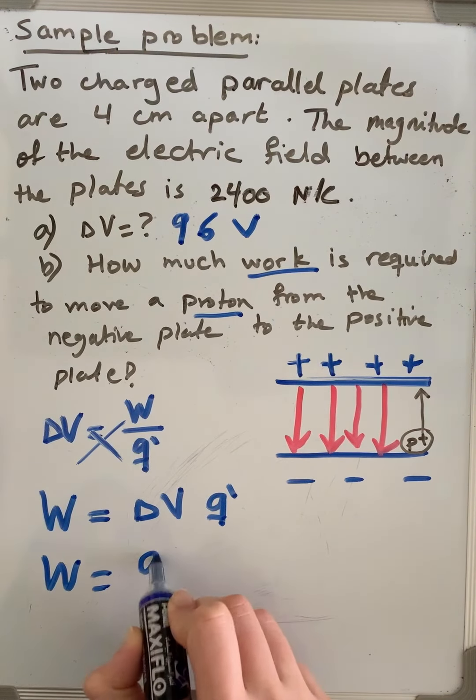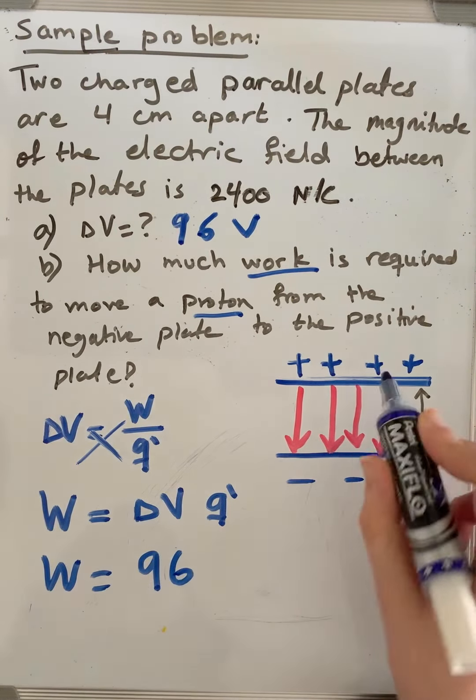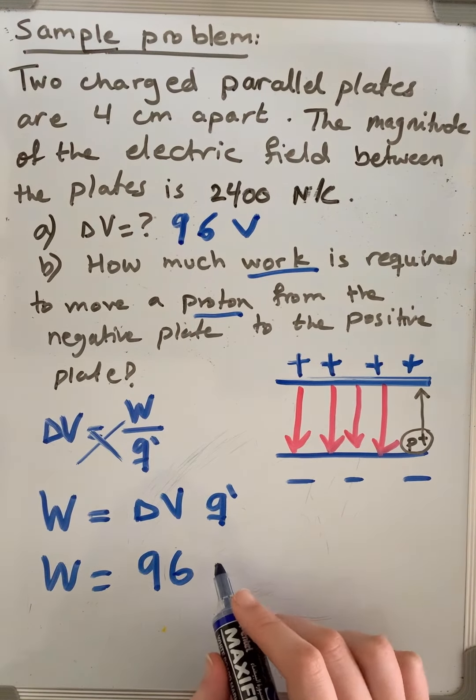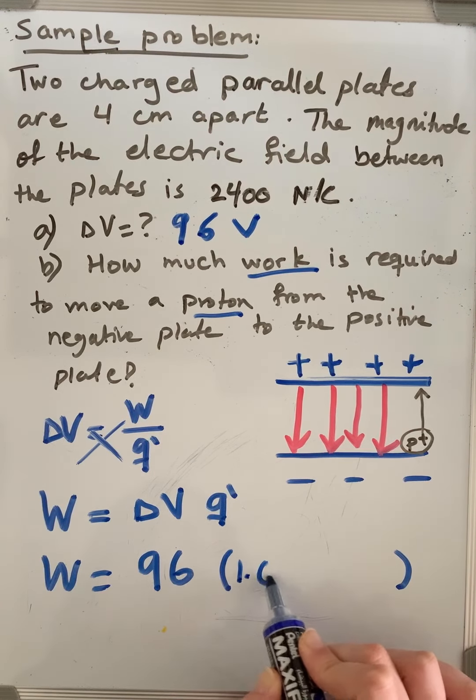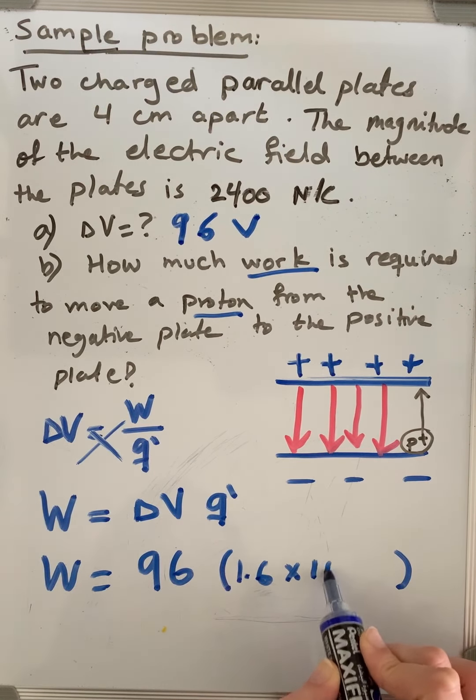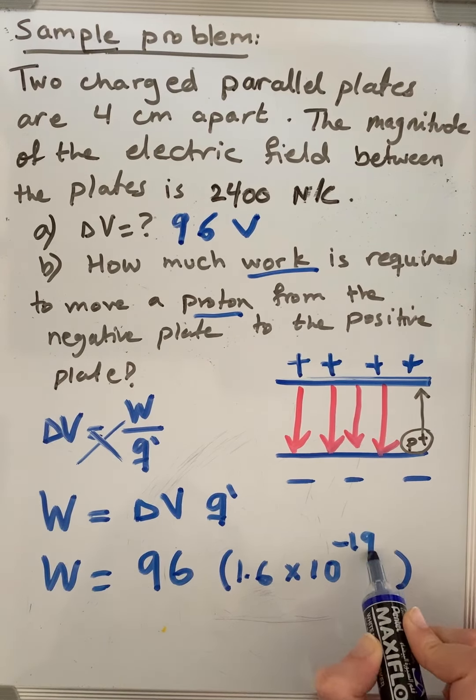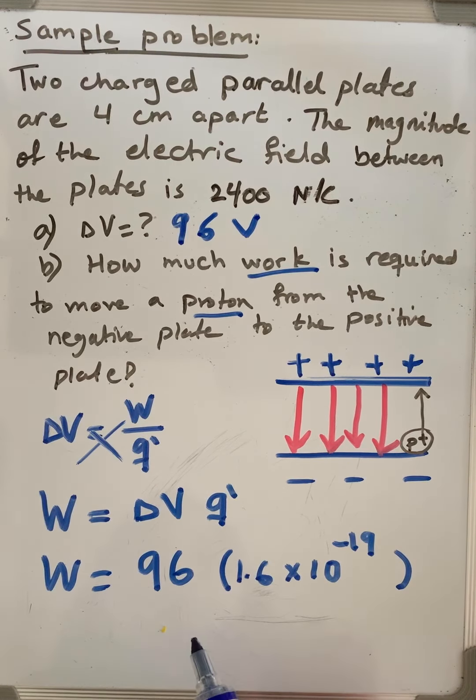So, the work will be 96, the potential difference between the two plates, multiplied by Q, the charge of the proton. The charge of the proton is equal to the charge of the electron, but the sign is positive. It's 1.6 multiplied by 10 to the negative 19 coulomb.